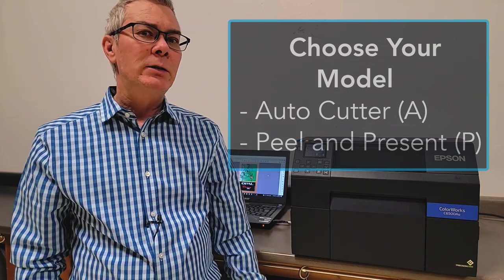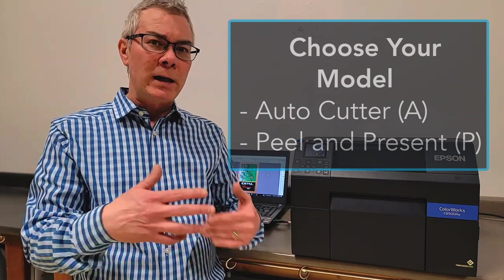To begin with, there are two models that you need to be aware of. This is the auto cutter version with the A, and there's also a peel and present model, which I'll explain to you in a little bit.